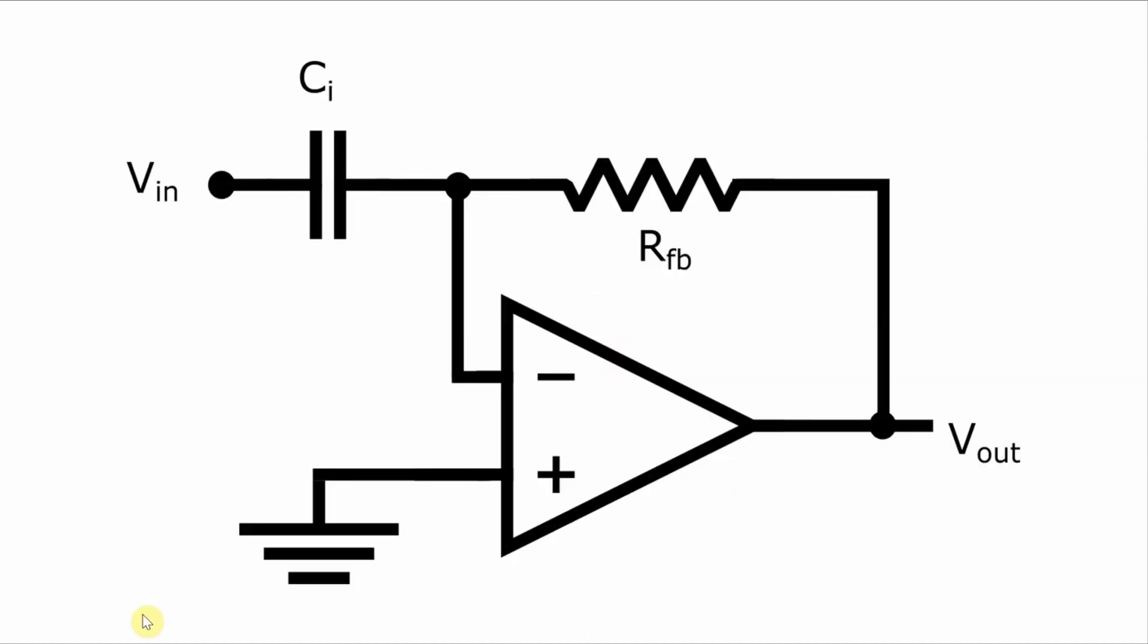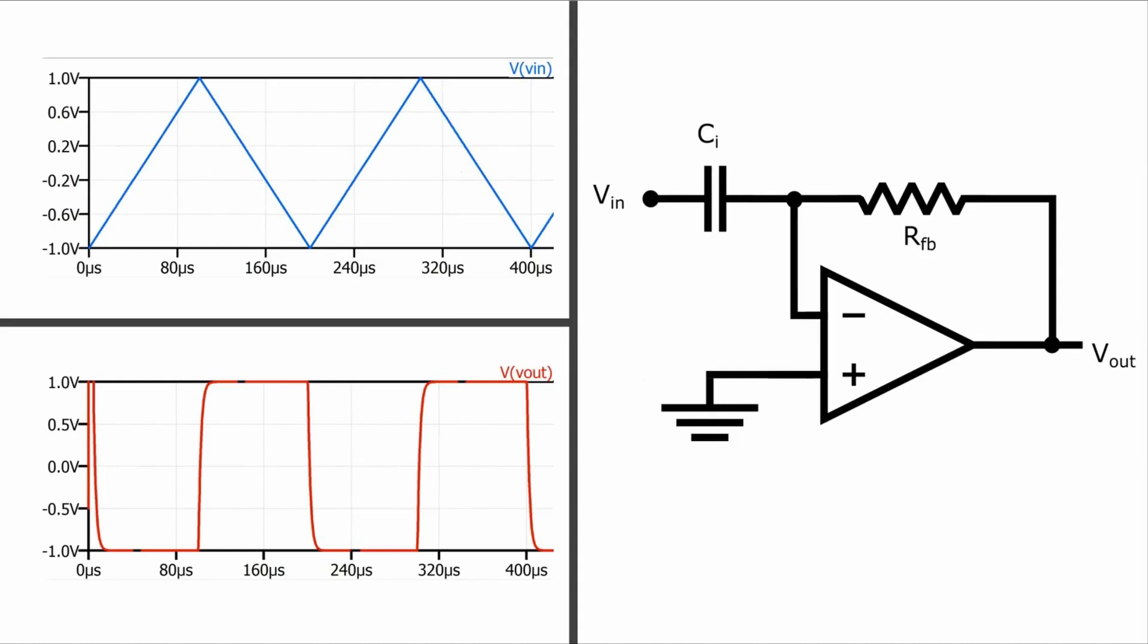Essentially, differentiators are high-pass filters and can be used for things like converting triangle waves into square waves. Remember that the derivative of a slope, like in a triangle wave, will give a constant value like the peak of this square wave.